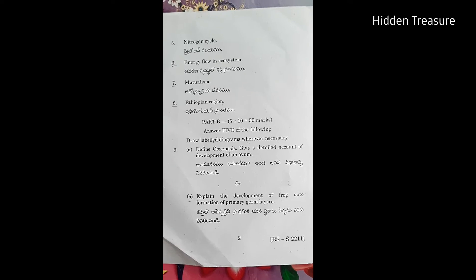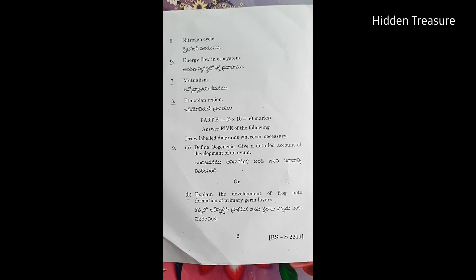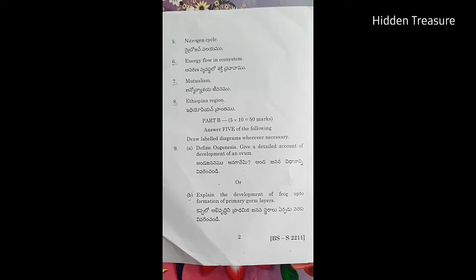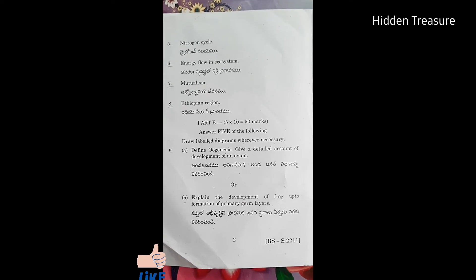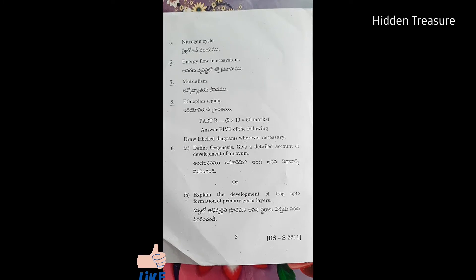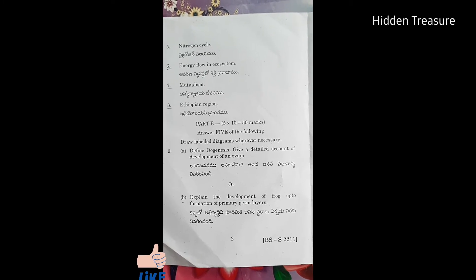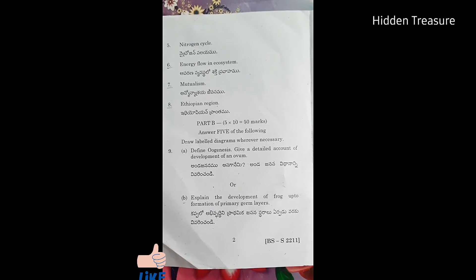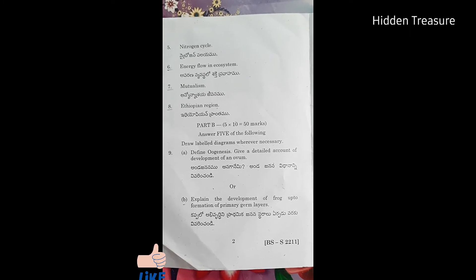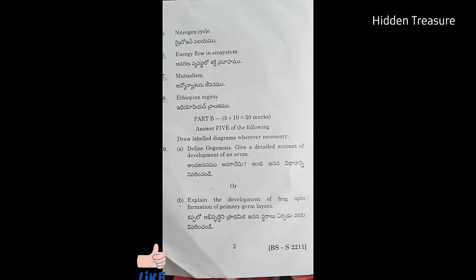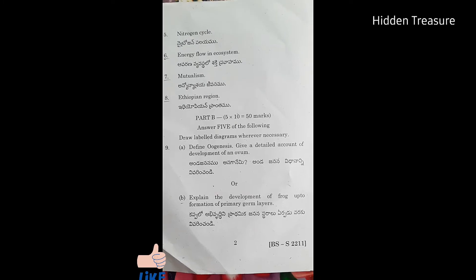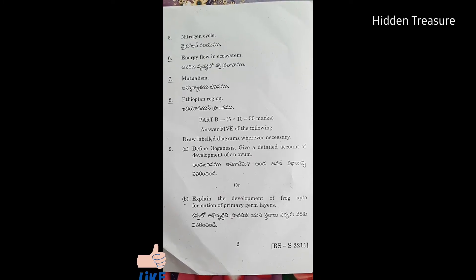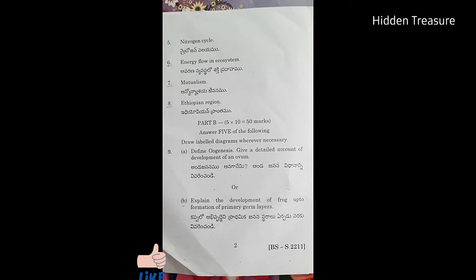In every question, there are options to answer. 9th Question: Define oogenesis; give a detailed account of development of an ovum; explain the development of frog up to formation of primary germ layers.